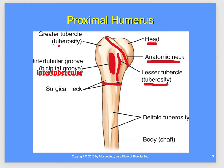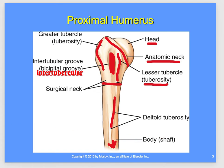Then we have the greater tubercle or tuberosity right here, what's called the deltoid tuberosity here, and the remaining portion is the body and shaft of the proximal humerus moving down.